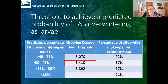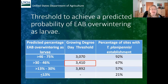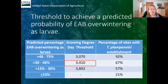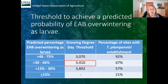We calculated a threshold of growing degree days needed for larvae to enter various categories of percentage overwintering as larvae. If you have more than 3,892 growing degree days in the summer, we expect between 13 and 30% of EAB to overwinter as larvae, and we expected a 57% chance that Tetrastichus would establish. Below that threshold, at less than 13% larvae, we would only expect Tetrastichus to establish 21% of the time. The more heat units accumulated, the higher the percentage probability that Tetrastichus would establish — once you get to 46–75% overwintering as larvae, you really do expect it to establish.